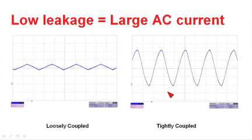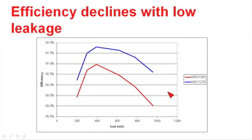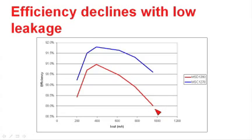It also increases the RMS currents within the circuit, which has a negative impact on the efficiency of the power supply. We took our test circuit, ran it with the tightly coupled inductor, then replaced it with the loosely coupled inductor, and measured efficiency. At high loads, we had almost a two percent degradation in efficiency due to the high circulating currents from the tightly coupled case.